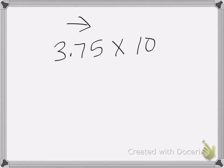Because when I multiply, my number is going to get bigger. So here's my decimal place, and I'm going to move it one place to the right. So I move it one place to the right, and I get 37.5 as my answer.